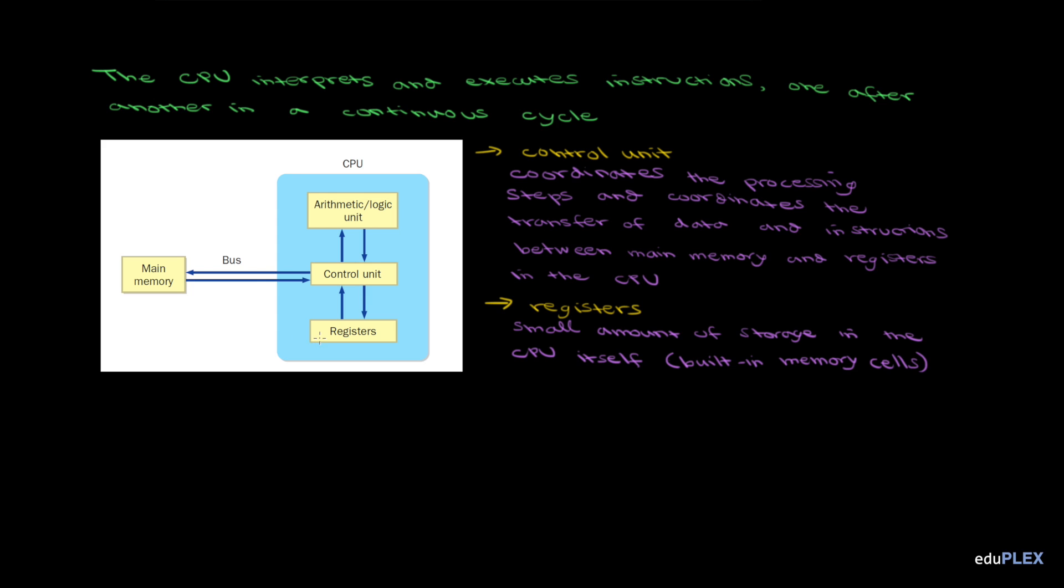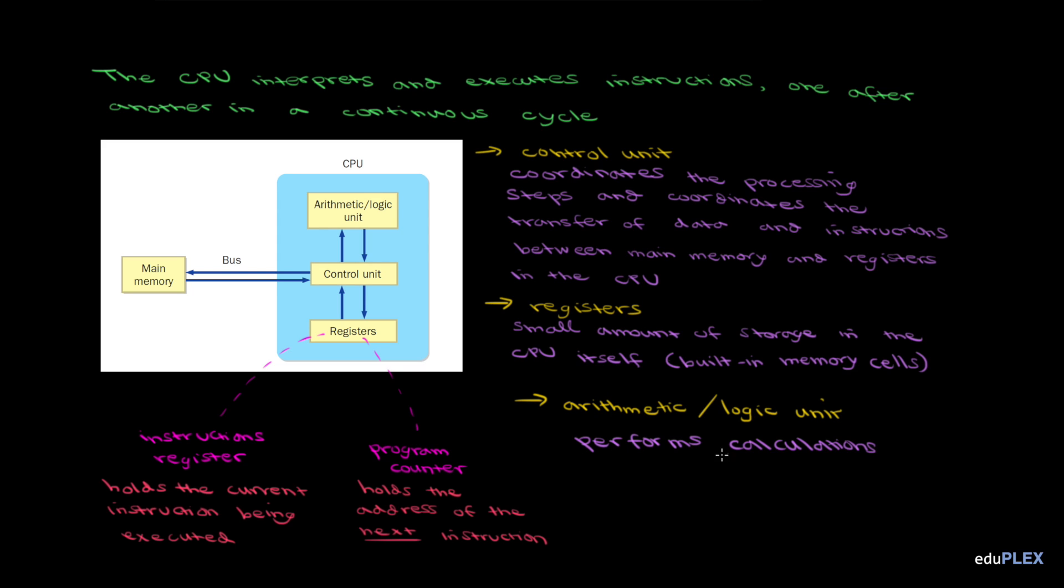Some registers have special purposes like the instruction register holds the current instruction being executed, while the program counter holds the address of the next instruction that will be executed. Finally, there's the arithmetic logic unit that performs calculations and makes decisions.